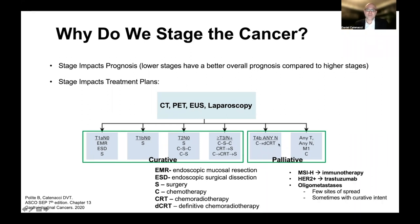That's not to say that in some cases of stage four metastatic disease we cannot have long-term survival. In treatment videos, we'll note situations where certain molecular subsets like MSI-high and HER2 with their matched therapies can actually lead to long-term survival. We'll also have a video focusing on oligometastases, where there are only a few sites of spread that can sometimes be addressed with curative intent. However, in general, when we're talking about metastatic disease, we're talking about palliative intent therapy.